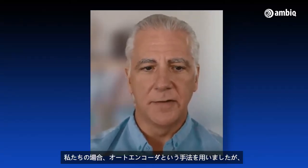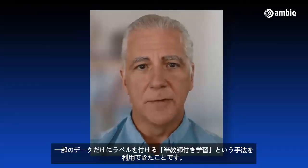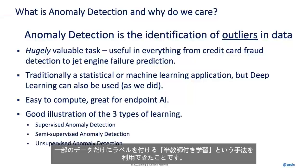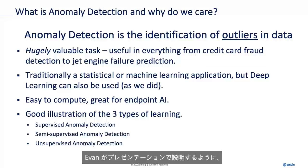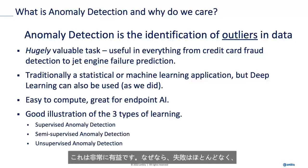The kind of deep learning we used was an autoencoder. Another thing that came out of this exercise was that we were able to use something called semi-supervised learning, where you only label part of the data. In this case, we only labeled good data. For anomaly detection, that's very valuable because failures are few and far between.